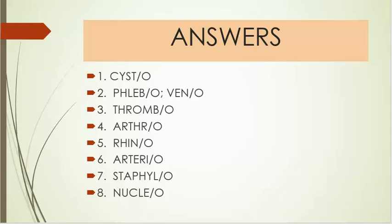Answers. Number one is systo. Number two is phlebo and venno. Number three is thrombo. Number four is arthro. Number five is rhino. Number six is arterio. Number seven is staphylo. And number eight is nucleo.